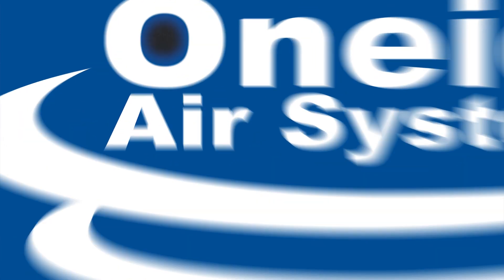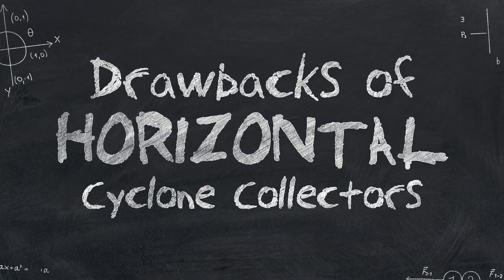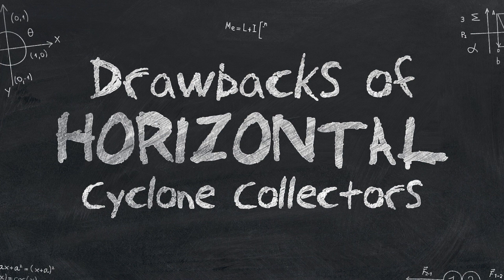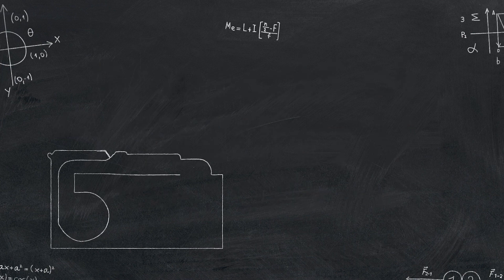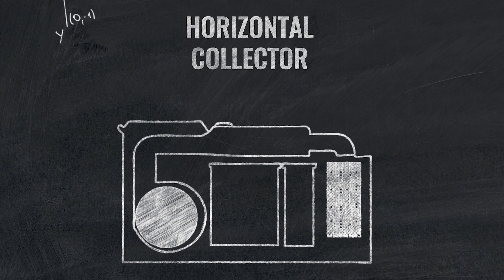Dust Collection 101 with Oneida Air Systems – The Drawbacks of Horizontal Cyclone Collectors. For horizontally-oriented cyclones, the separation process is fighting against gravity half the time as the dust spins up as it goes around.